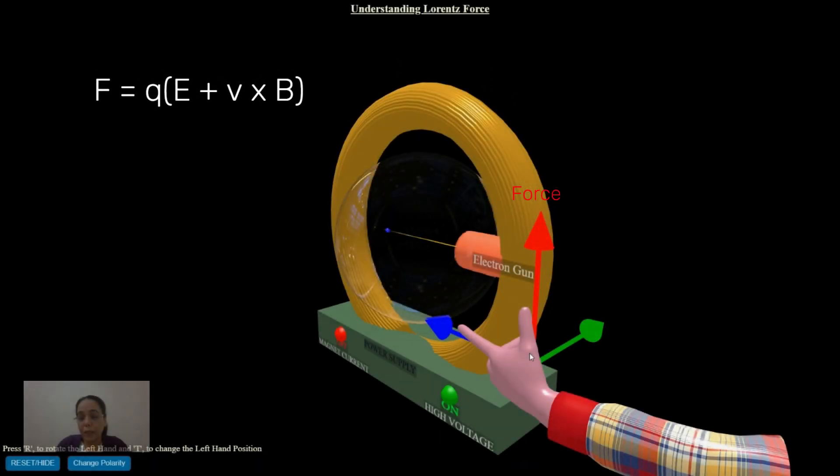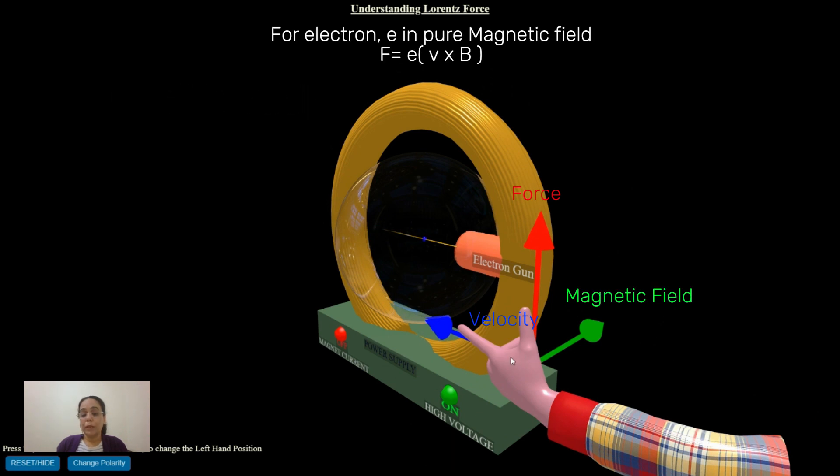What you need to understand is that the Lorentz force is always perpendicular to both the velocity and the magnetic field. This is a perfect example of cross products of vectors.